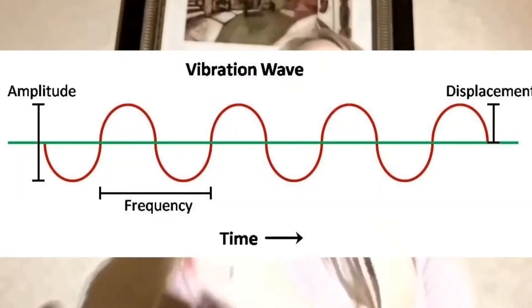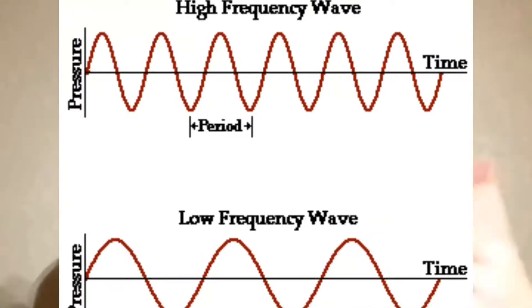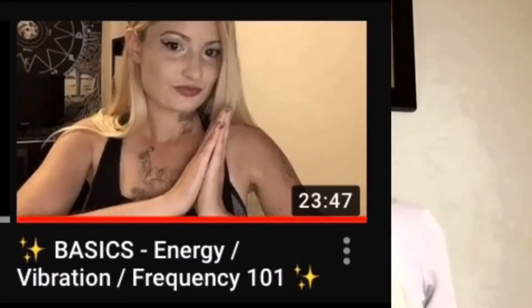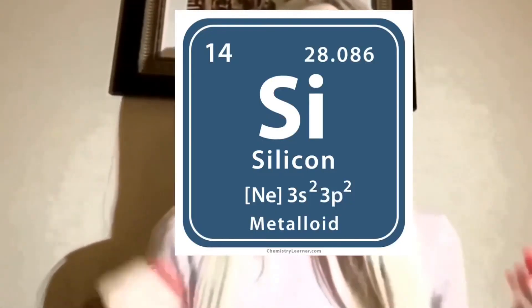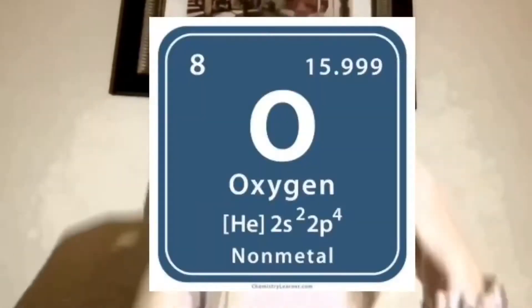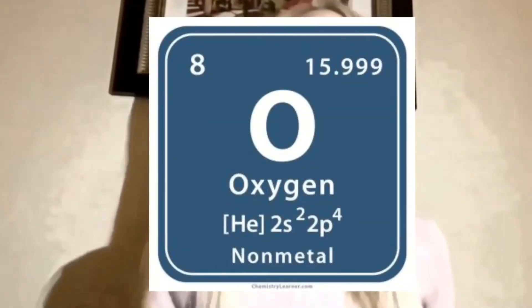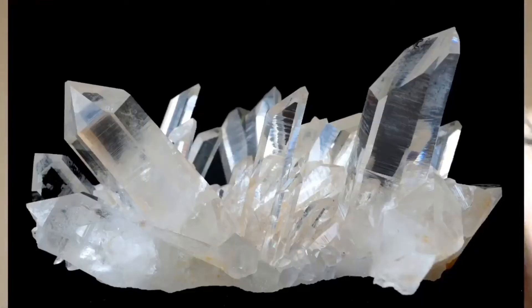To better understand the concept of vibration, I highly recommend watching the previous video titled 'Basics: Energy, Vibration, and Frequency.' When different minerals are compounded together, this alters their frequency. For example, the mineral silicon has its own specific vibration, and so does oxygen. When these elements are combined, the frequency changes altogether and it actually creates quartz crystal.